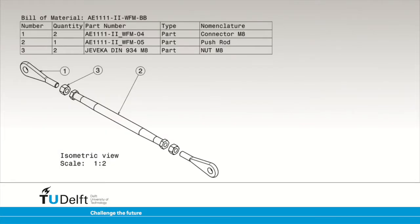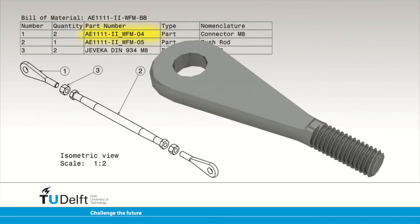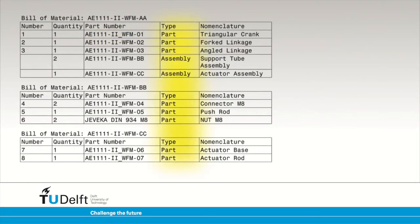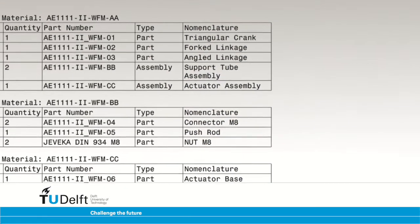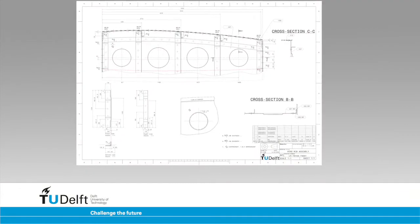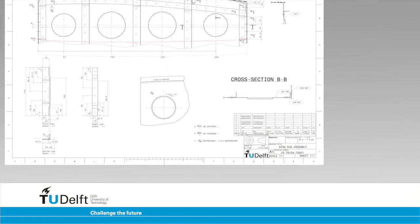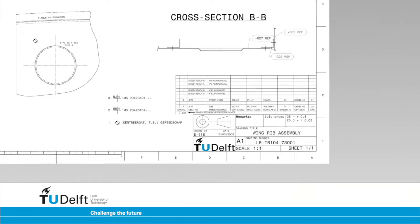The numbers in the balloons correspond to the numbers in the bill of material. The BOM contains information about each component: the quantity is shown, so if a component is present multiple times in the assembly this will be shown in the table. The part number is shown — in the case of the wing flap mechanism, the part number is identical to the drawing number and the file name of the 3D model. The type column shows whether the component is an individual part or a sub-assembly. The nomenclature column shows the name of the part. Other information can also be found in the BOM, such as the material, the main dimensions, and other relevant details.